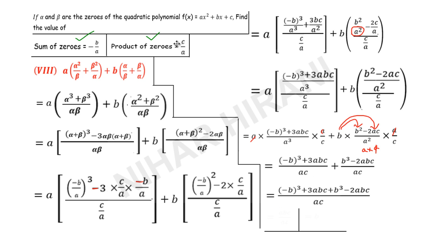Both denominators are now ac. Combining like terms: 3abc − 2abc = 1abc, and -b³ + b³ cancels. So I am left with abc / ac.